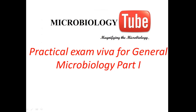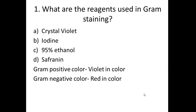Welcome to the next episode of the Microbiology Tube. Today we are discussing the questions that the examiner can ask students in the microbiology practical. They will ask very simple questions at first, such as about the reagents used in the Gram staining. The reagents used in Gram staining are crystal violet, iodine, 95% ethanol (also called alcohol), and safranine.